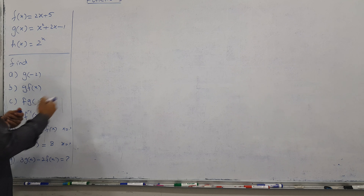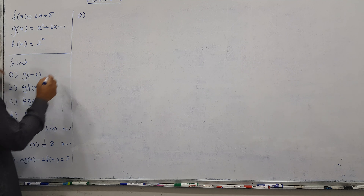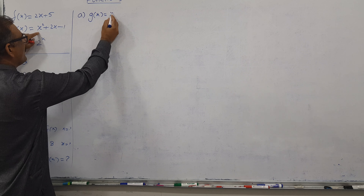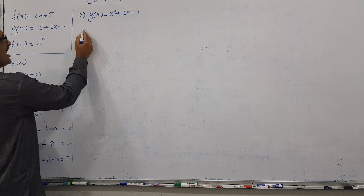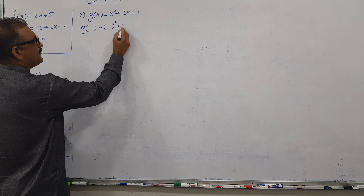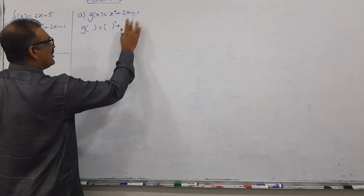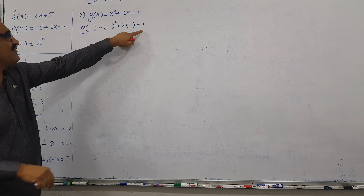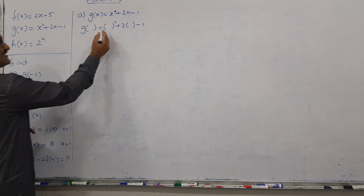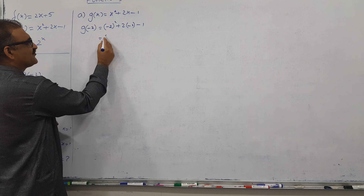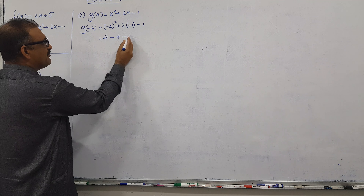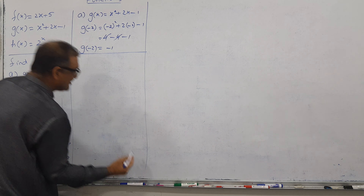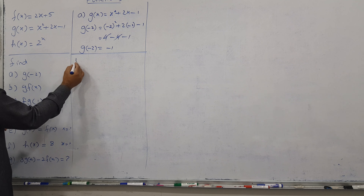Part A: Find G of minus 2. First, copy the full G function exactly without any change. After copying, replace all X's with empty spaces. We had X in three positions, so we place minus 2 in all three spots. This gives us 4 minus 4 minus 1, and the 4's cancel. So G of minus 2 is equal to 1.